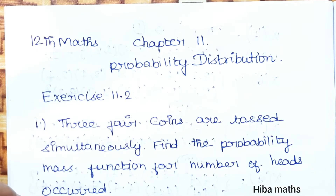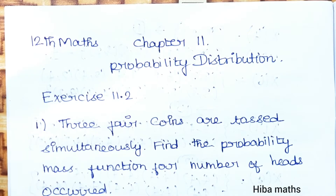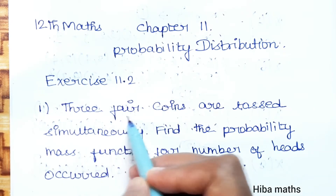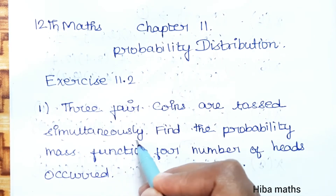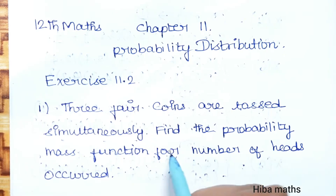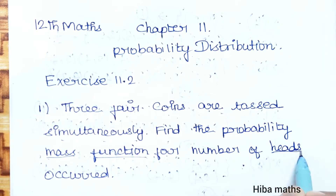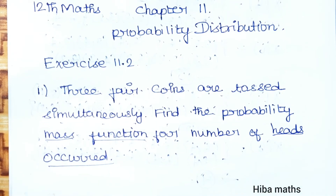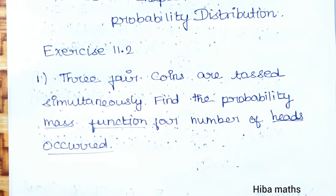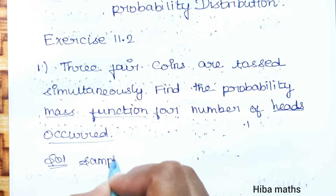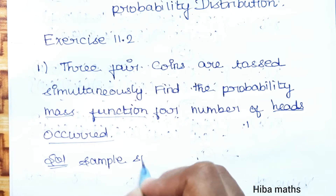Hello students, welcome to Hibamax 12th standard, Chapter 11 Probability Distribution, Lesson 11.2, first question. Three fair coins are tossed simultaneously. Find the probability mass function for the number of heads occurred. Let's look at the solution — first, the sample space.